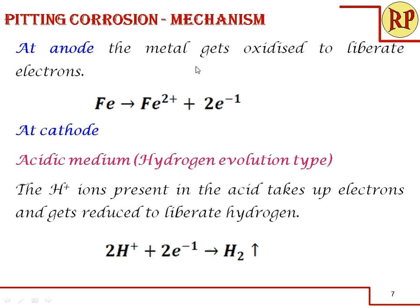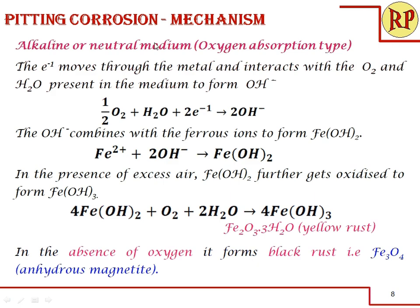Let us look into the mechanism. At the anode, iron gets oxidized to liberate electrons. At the cathode, it depends on the medium. In acidic medium — hydrogen evolution type — the electrons released at the anode are taken up by H⁺ ions present in the acid to form hydrogen. In alkaline or neutral medium — oxygen absorption type — oxygen and water take up the electrons to form hydroxide ions, which combine with Fe²⁺ ions present at the anode to form ferrous hydroxide, Fe(OH)₂.